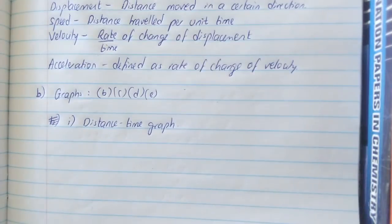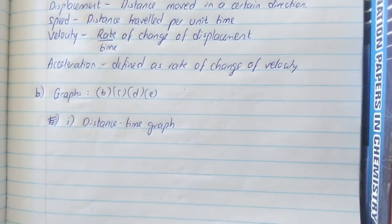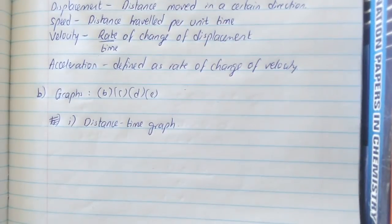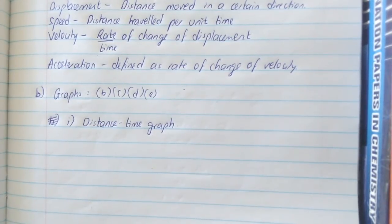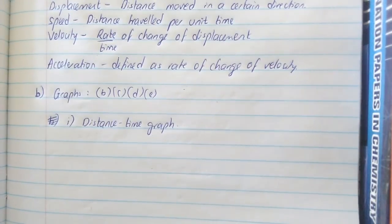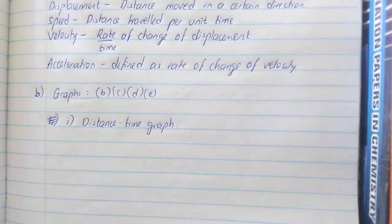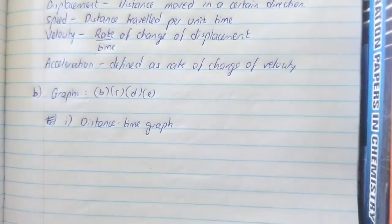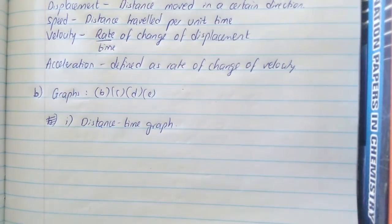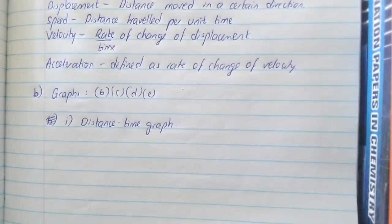Now we're going to be dealing with graphs. Parts b, c, d, and e of the learning outcomes are all concerned with graphs and calculations involved with these graphs. I'm going to cover them one by one, starting with the distance-time graph, covering as many interpretations and calculations as we can.